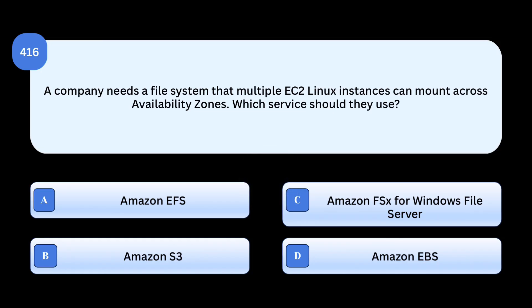Correct answer: Amazon EFS. Amazon Elastic File System is a fully managed, scalable file storage that can be mounted across multiple instances and AZs. Why others are incorrect: Amazon S3 is object storage, not a mountable file system. Amazon FSx for Windows supports Windows-based workloads. Amazon EBS is block storage attached to a single instance, not shared.